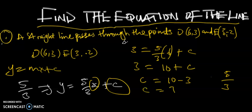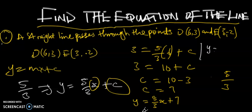Putting it back into our equation, we have y = (5/3)x + 7. Therefore we can conclude that the equation of the line passing through the points (6, 3) and (3, −2) is y = (5/3)x + 7. And this is how we find the equation of the line.